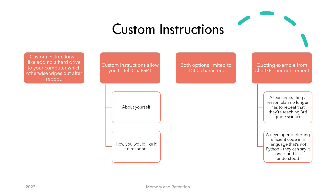This new feature, accessible on the interface using the three dots, allows you to tell ChatGPT about yourself and how you would like it to respond. The about yourself part is the context section where you can tell ChatGPT about what kind of work you do, your education and experience level, what interests you, where you live, and so on — not random information, but information that would help ChatGPT give you more personalized responses.